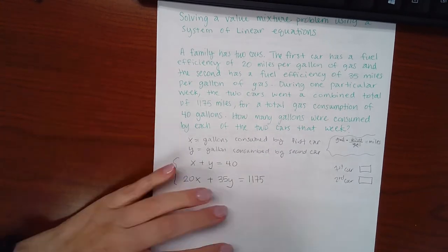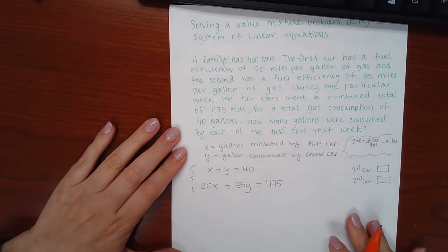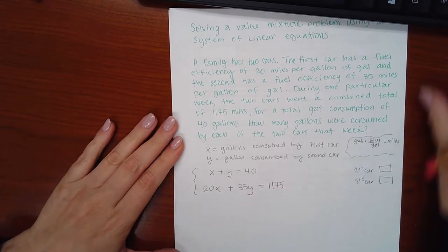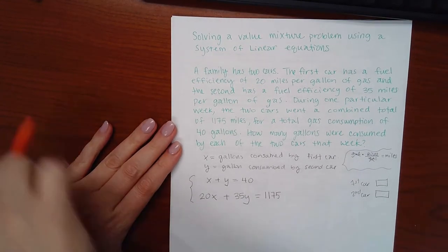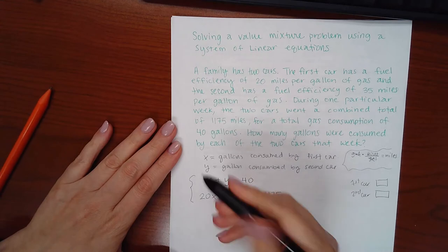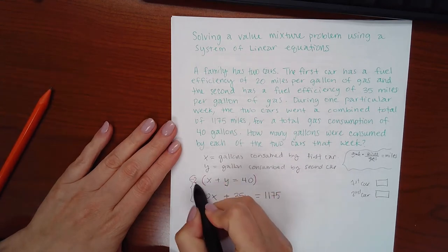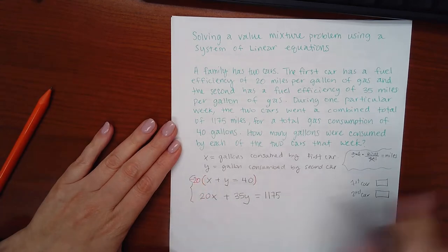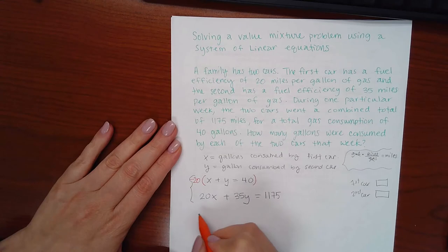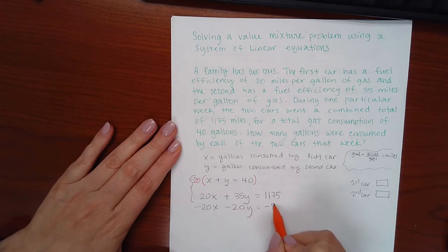These are the equations that I'm going to need to solve. You could use substitution, however, I am actually a bigger fan of the elimination method. So what I will do is I will multiply this entire top equation by negative 20 so that this positive 20 and that negative 20 will cancel the x's. So I get negative 20x, negative 20y, equal to negative 800.